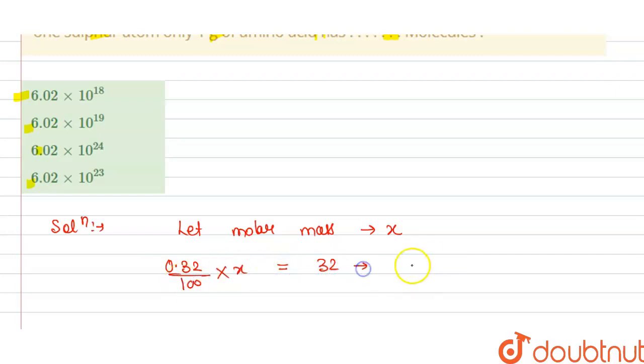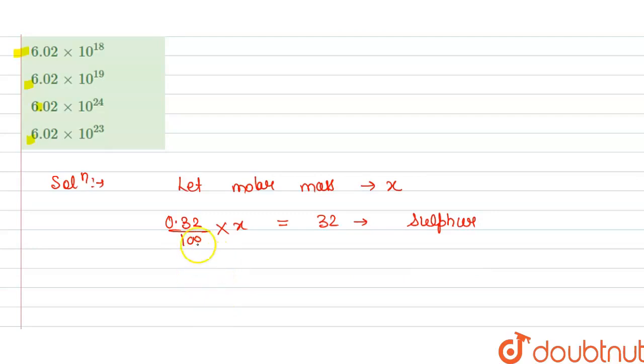...equals to 32, that is the mass of the sulfur as one atom is present here. So from this we can say that x equals—this cancels out with this and this is one here, and this will become divided by 100 if we remove the decimal here—so this is 10 power 4 grams. So this is our x here, that is the molar mass.